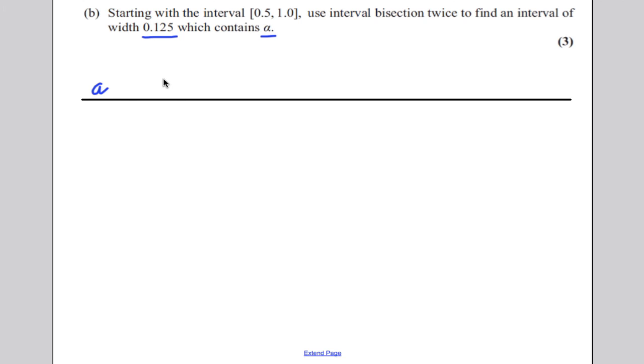So start off with an a value, and then work out f of a. A b value, work out f of b, then bisect the interval a, b, i.e. work out a plus b over 2, and lastly work out f of a plus b over 2.